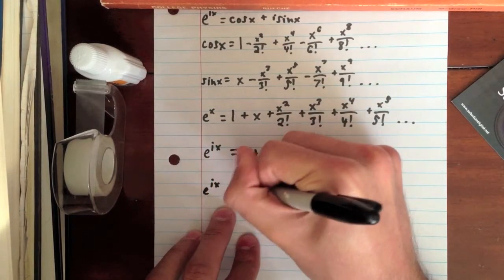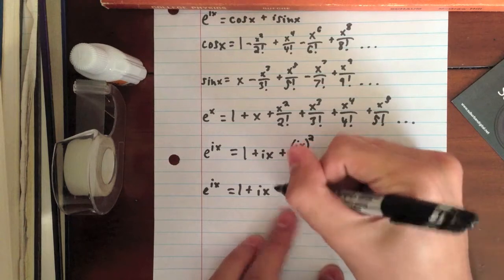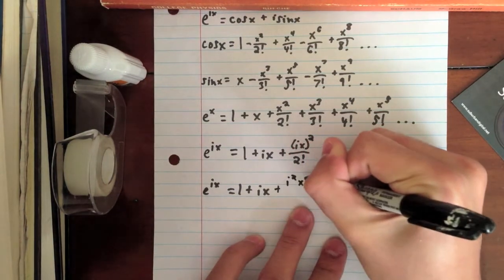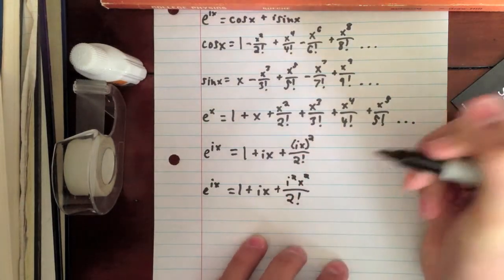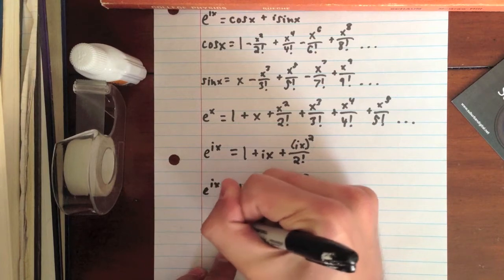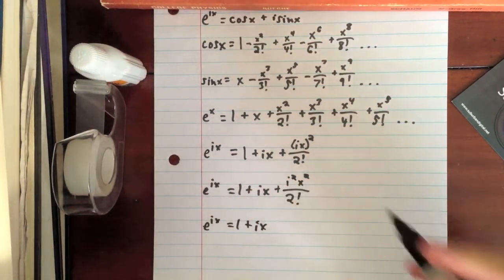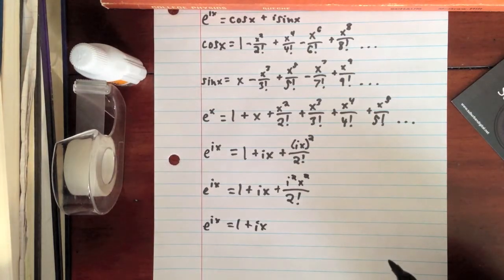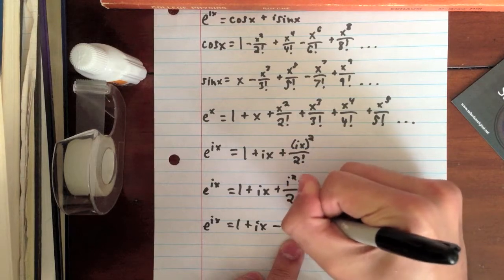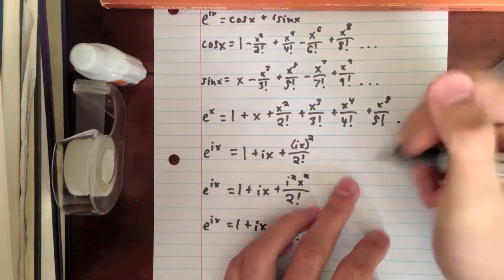Equals one plus ix. Now, we know that this we can change to write like this: i squared x squared over 2 factorial. And then, I'm going to move down to another line. eix equals one plus ix. And since i squared, we know, is equal to negative one, we can just write this like minus x squared over 2 factorial. And we're just going to keep going with this.